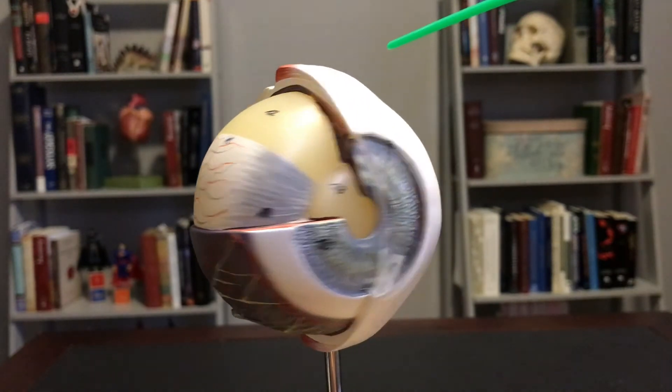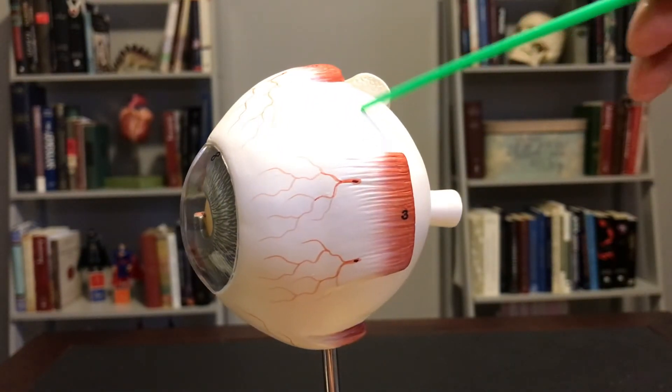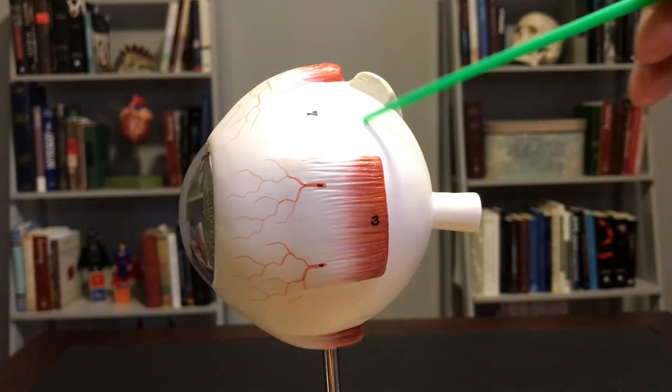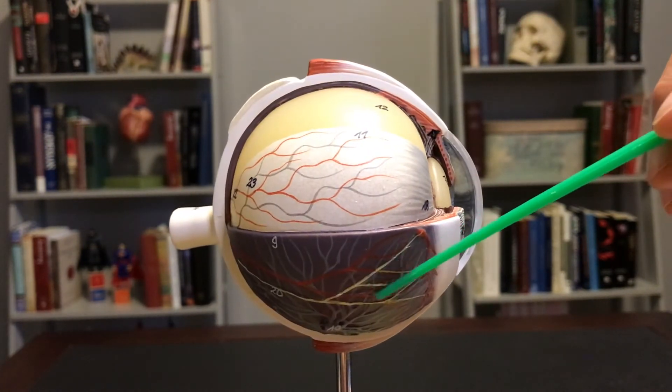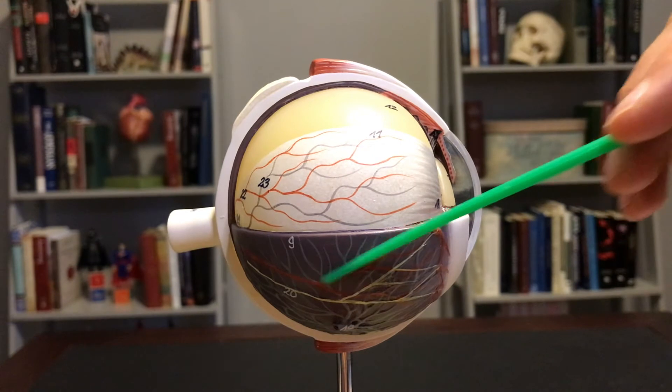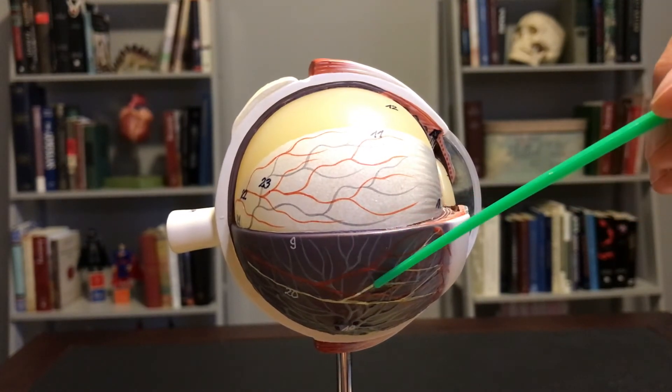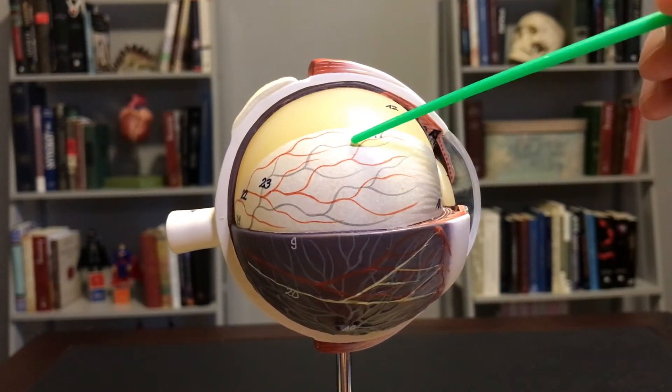Again, as we look at the layers here, we have this sclera. That's the white of the eye, so to speak. If we go a layer deep to that, we're looking at the choroid. This is the very vascular layer. And as we go deep to that, this is the retina.